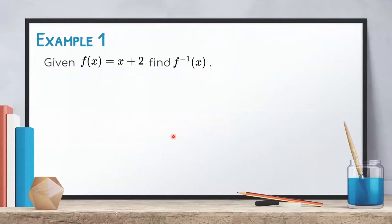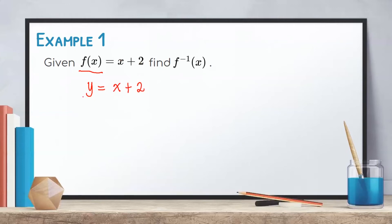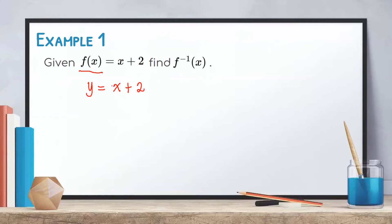Let us consider this example. Given f of x equals x plus 2, find the inverse of the function. Following the presented steps, first, we express f of x as y, so we have y equals x plus 2. Next, we interchange x and y, making y become x and x become y. Therefore, it becomes x equals y plus 2.